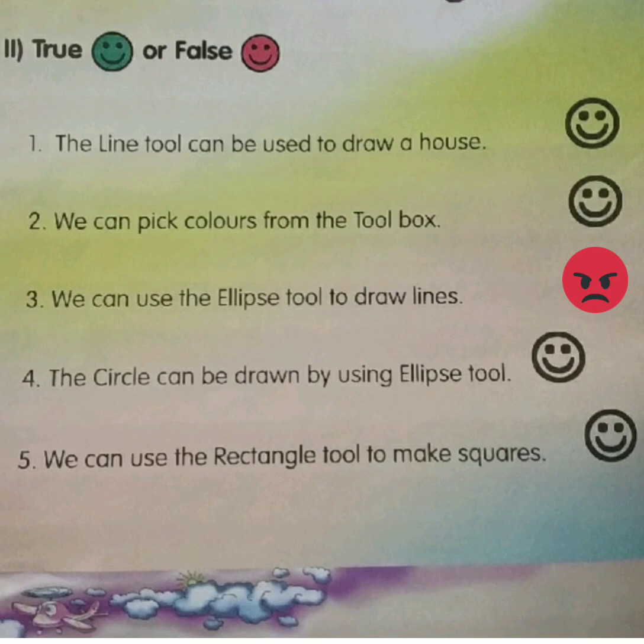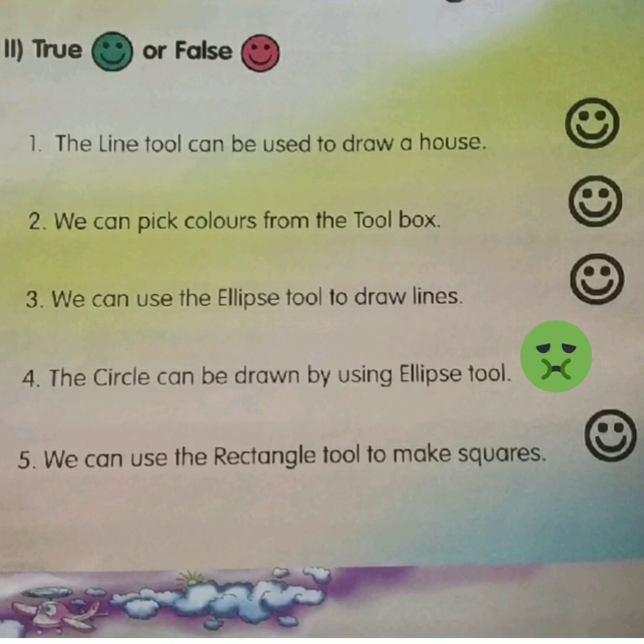Fourth statement: the circle can be drawn by using the ellipse tool. The ellipse tool can be used for drawing circles and ellipses, so this is true — color with green.